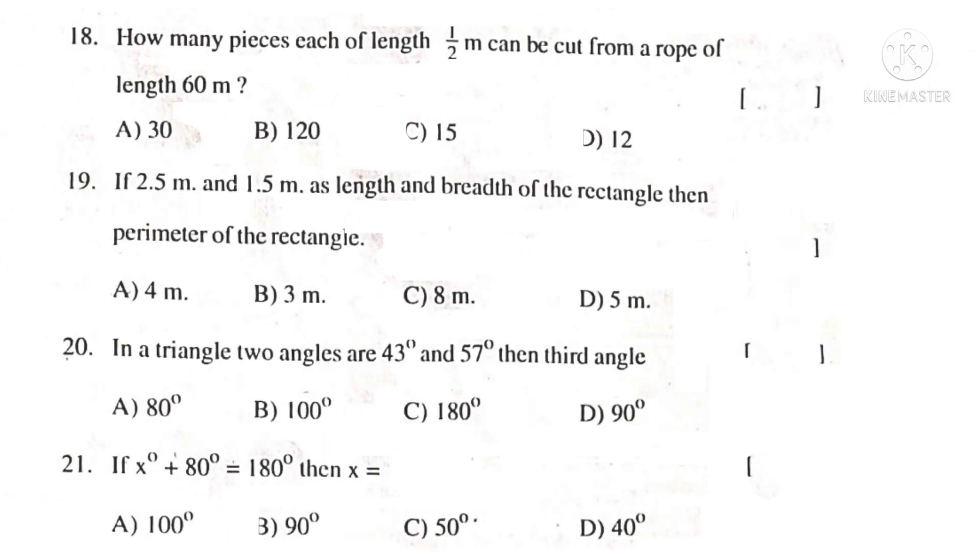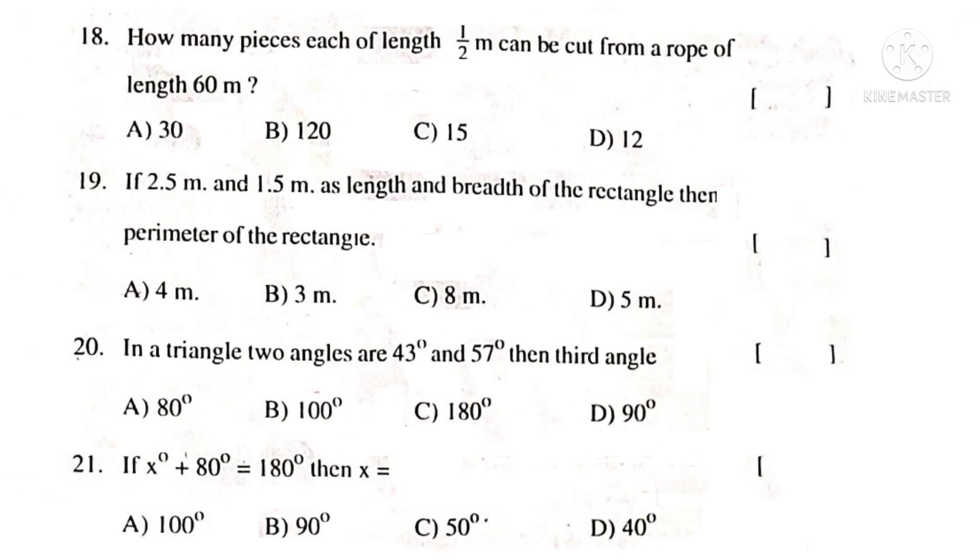Now, 18th Question. How many pieces each of length of half meter can be cut from a rope of length 60 meters? Observe the number half, write half. Half indicates multiplication and write 60. On simplification by 2, two 30 times. That is equal to 30 is the answer. So, the correct choice is A.